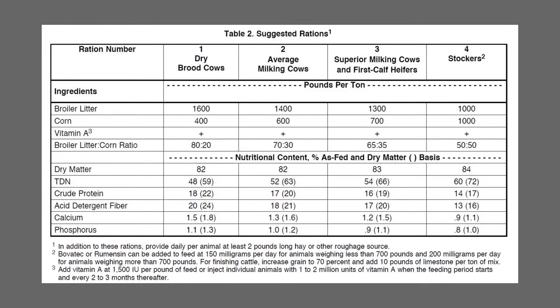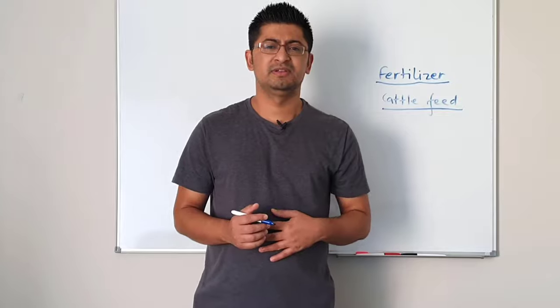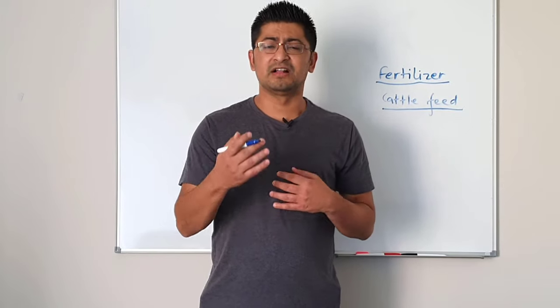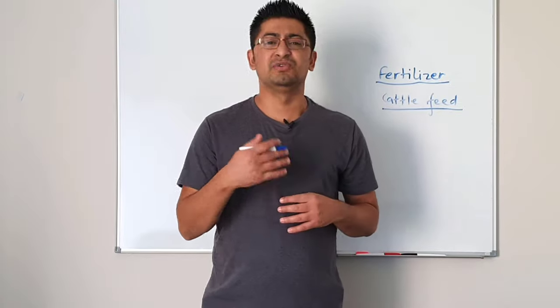When using broiler litter for your cattle, you have to follow the recommended chart. For dry brood cows, use a broiler litter to corn ratio of 80 to 20, with vitamin A added at 1,500 IU per pound of feed. For average milking cows, the ratio is 70 to 30. For superior milking cows, use 65 to 35, and for stockers, use 50 to 50. You also need to add vitamin A to those diets. You can also collaborate with local cow farmers and sell them your broiler litter so that both parties benefit.